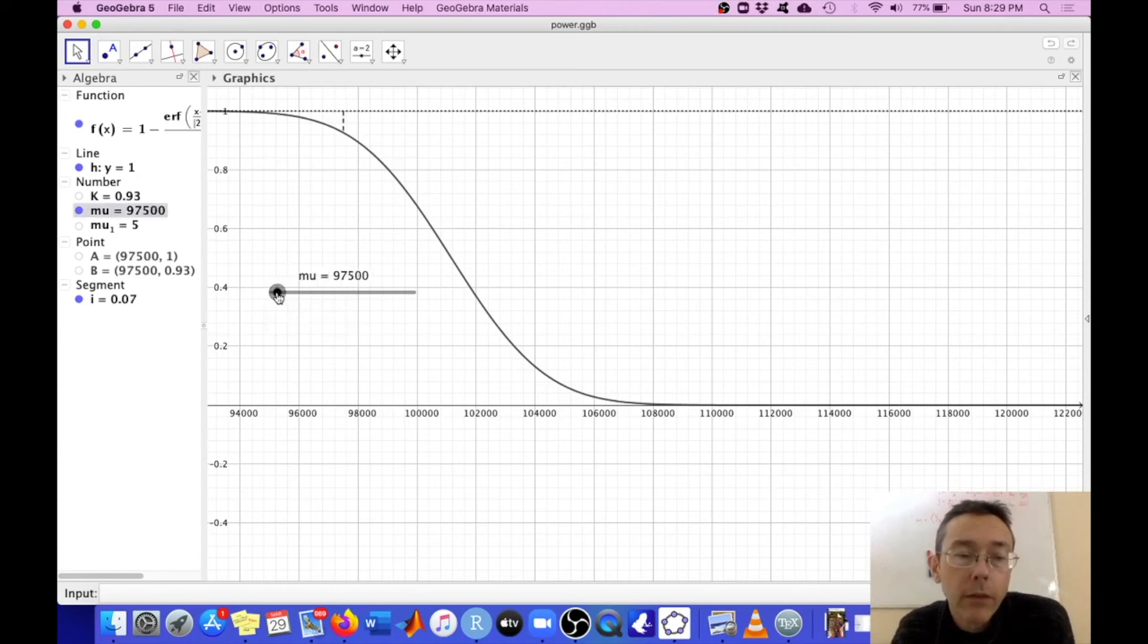As mu gets further and further away from that hypothesized value in the direction of the test, you're going to see that the power of the test K gets larger and larger and larger. And when you get a population mean, a true population mean that is very, very high, then the chances get very, very close to one that the null hypothesis will be rejected by that test. So in other words, K gets closer and closer to one.